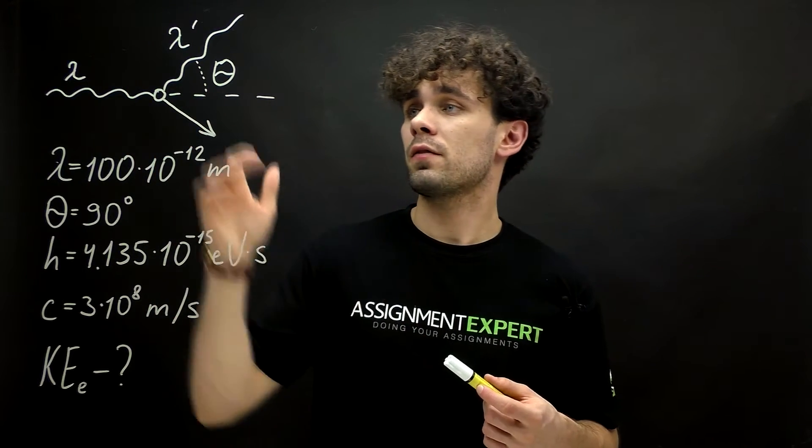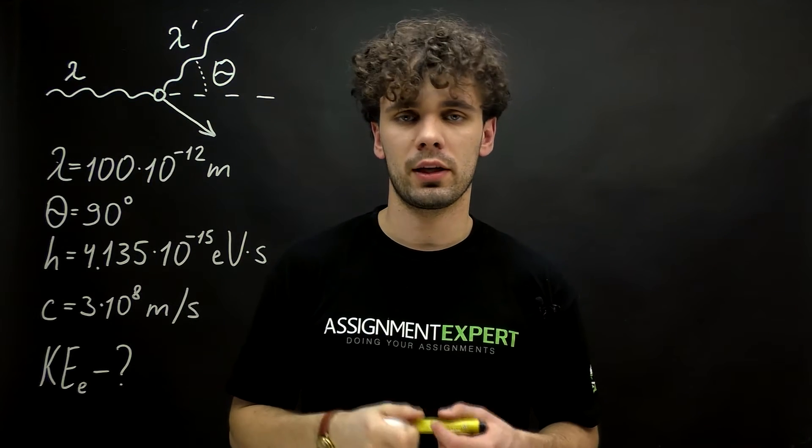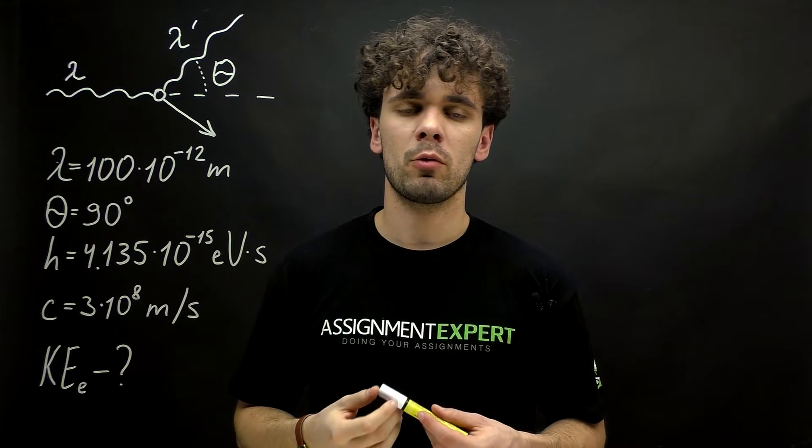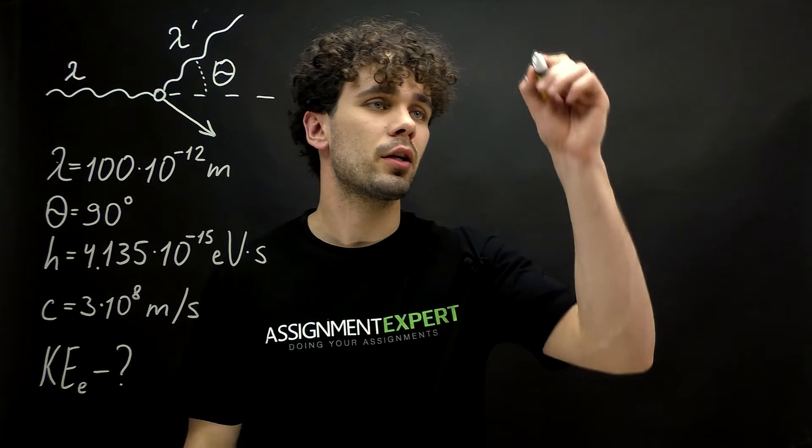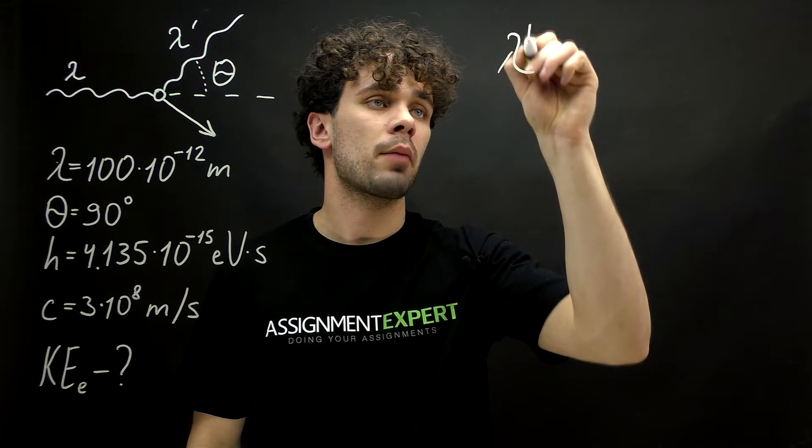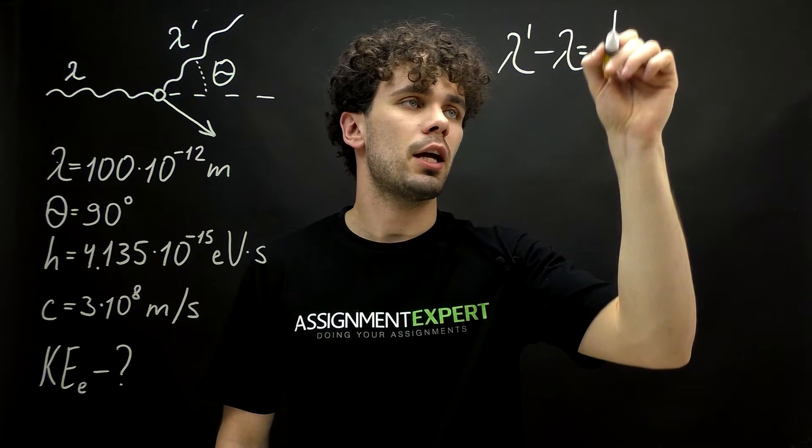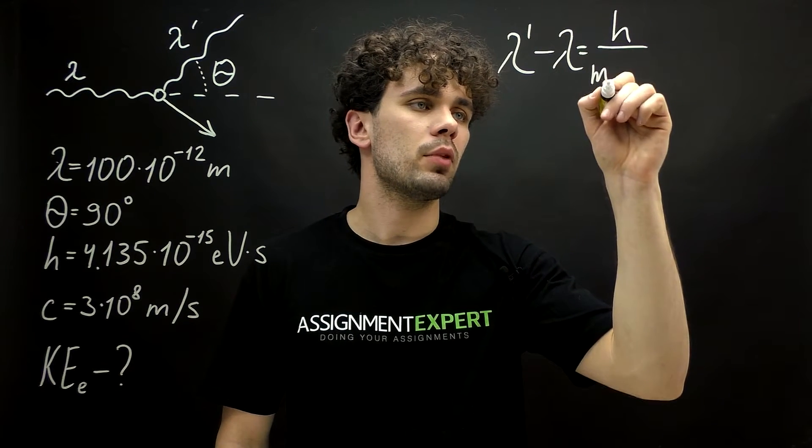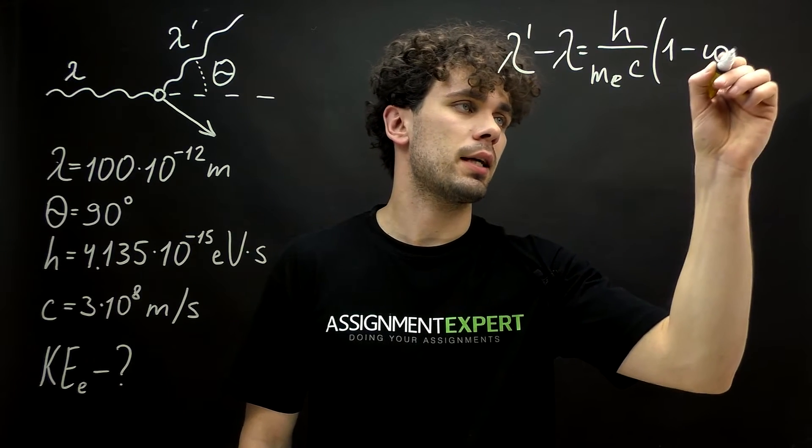So, first let us find the lambda prime, the wavelength of the photon after the collision. And for that we will use the Compton scattering equation. It goes like this: lambda prime minus lambda equals h over mE times c times 1 minus cosine theta.